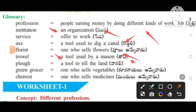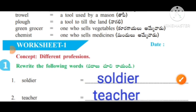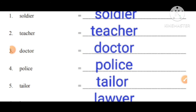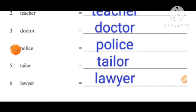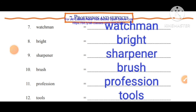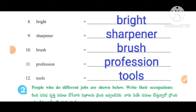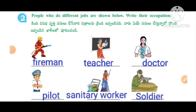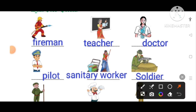A trowel is a tool used by a mason. A plough is a tool used to till the land. A green grocer is one who sells vegetables. A chemist is one who sells medicines. Worksheet 1, concept: Different Professions. Rewrite the following words. The given words are: soldier, teacher, doctor, police, tailor, lawyer, watchman, knife sharpener, brush — profession and tools.